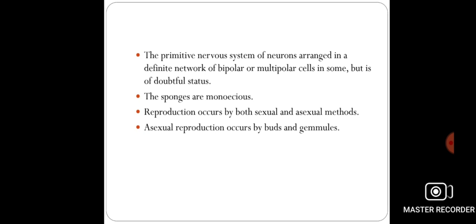The nervous system is of a primitive type, consisting of a large number of neurons arranged in a definite network of bipolar or multipolar cells. In some poriferans — mostly poriferans are monoecious or hermaphrodite — meaning a single organism has both male and female reproductive organs.